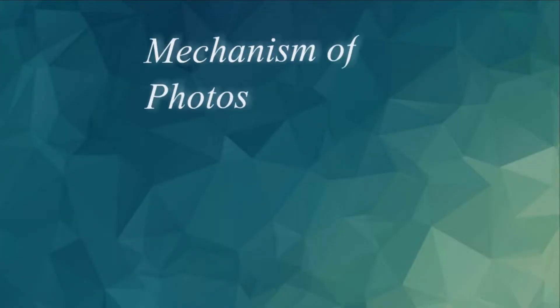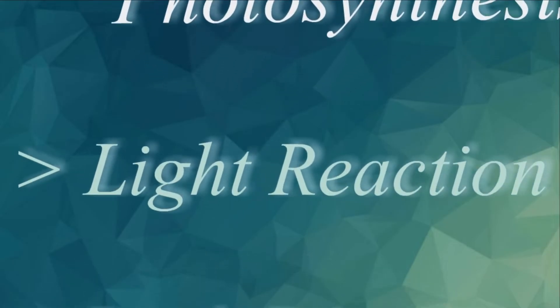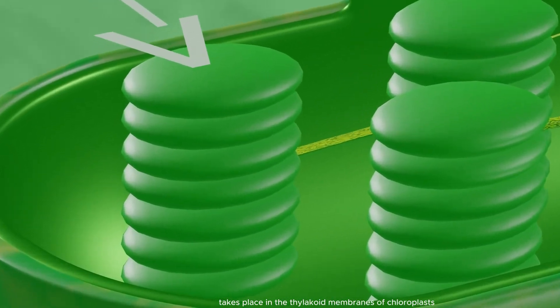Mechanism of photosynthesis: photosynthesis occurs in two phases - light reaction and dark reaction. The light-dependent reaction takes place in the thylakoid membranes of chloroplasts.